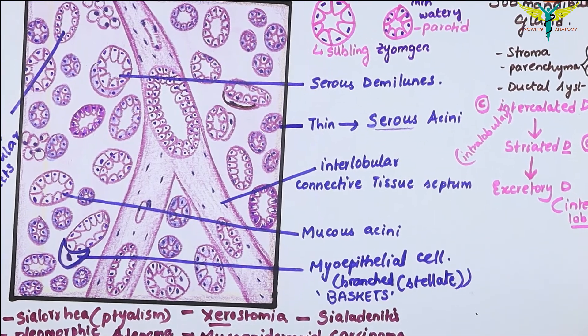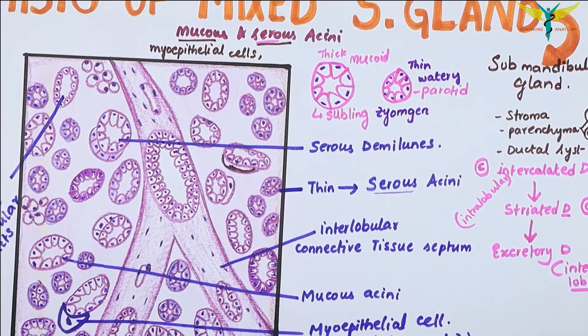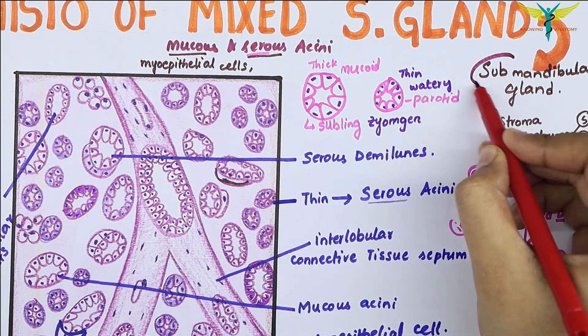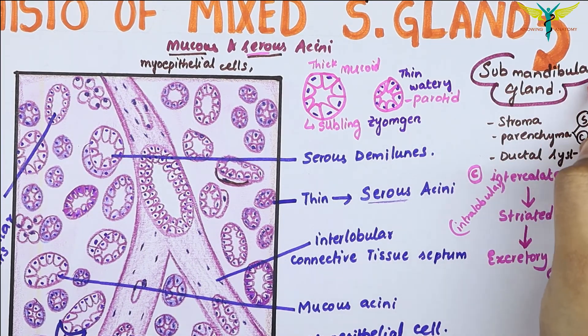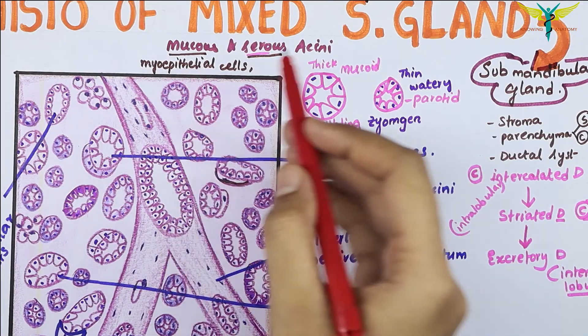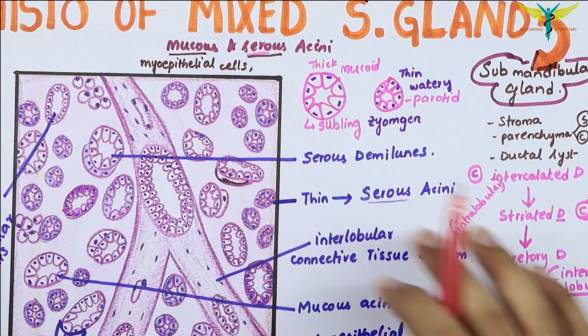So this is all about the mixed type of salivary gland, that is the submandibular type, covering the mucus and serous acini with clinical correlation.